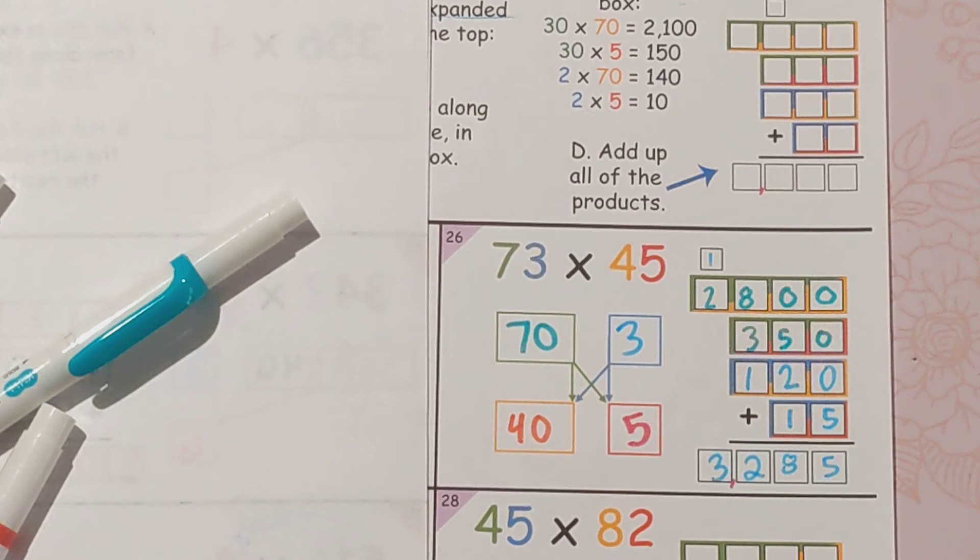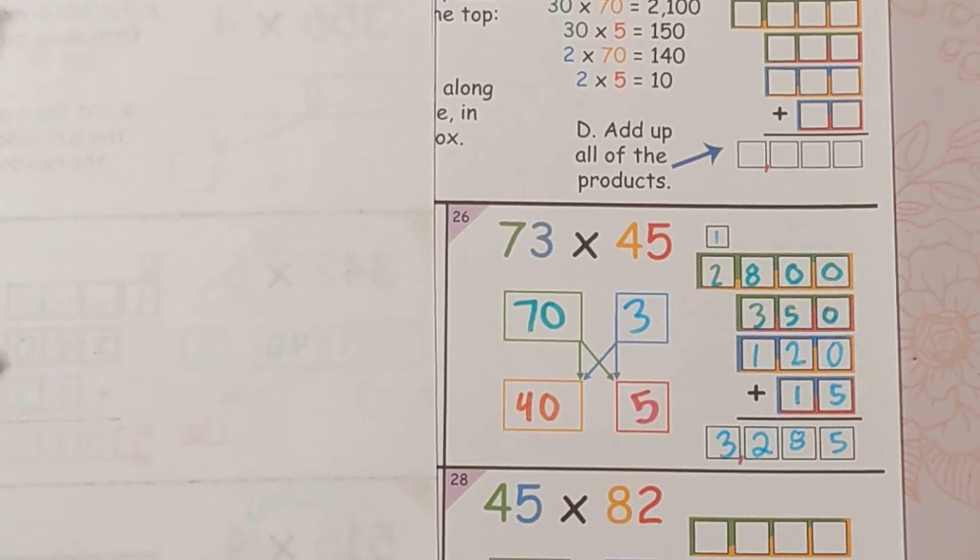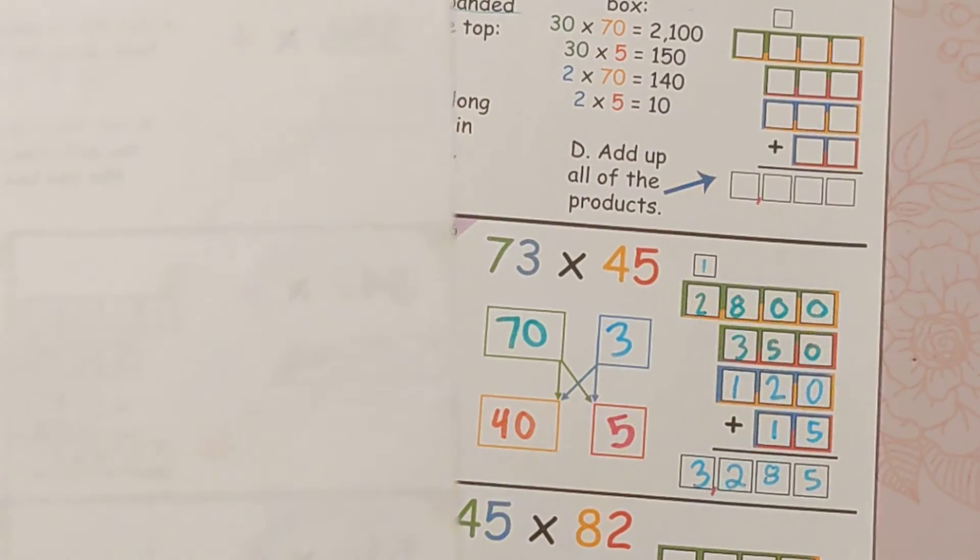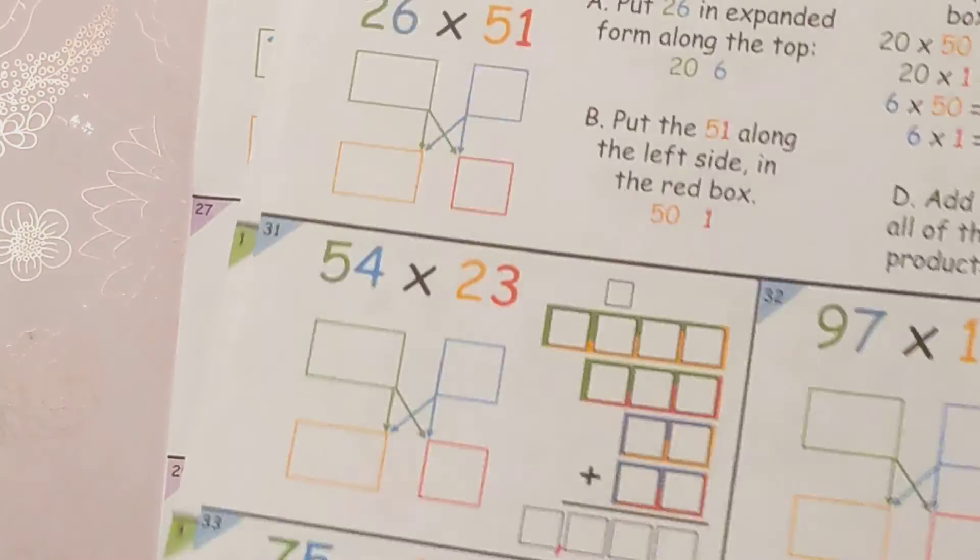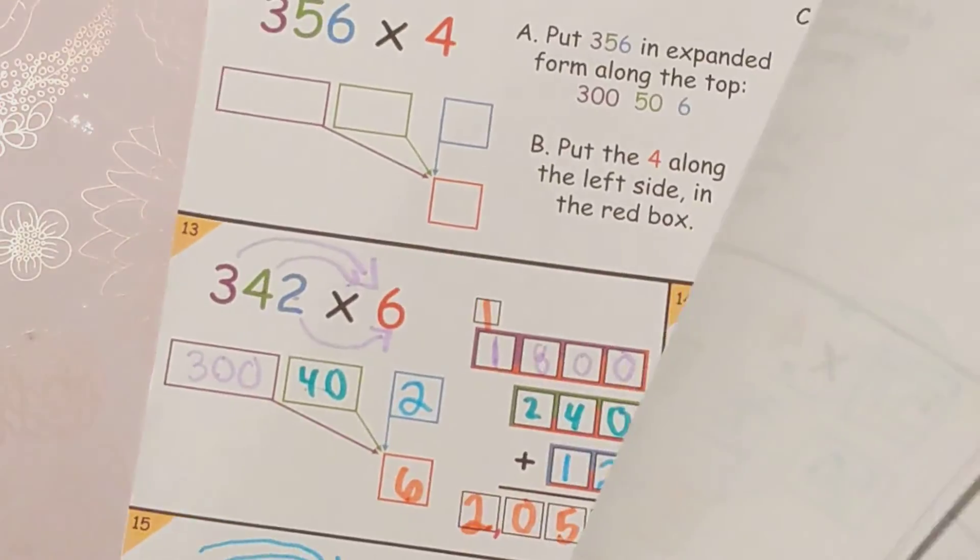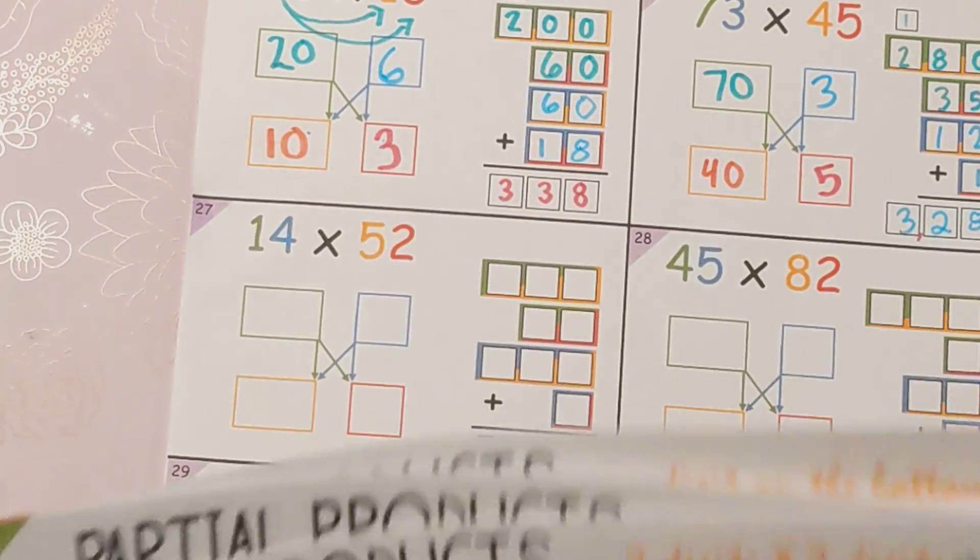So we get 3,285. So that's partial products, two digits times two digits. Next up I'm going to do the next one in the series. Feel free to keep watching if you want to get more practice, and click on the link below to get the worksheets and the digital version of partial products.